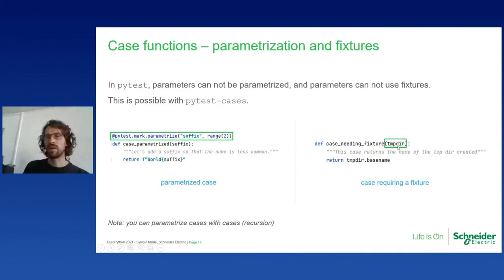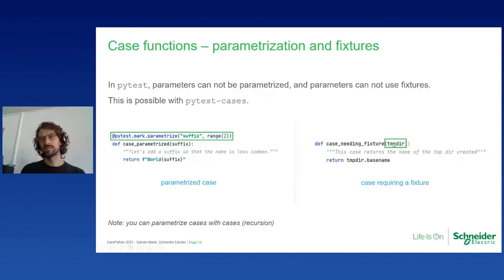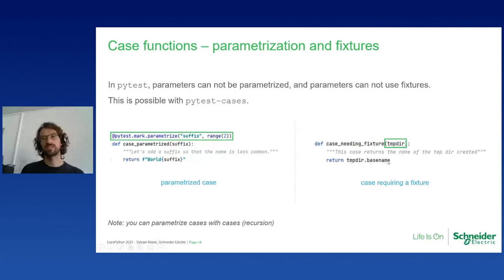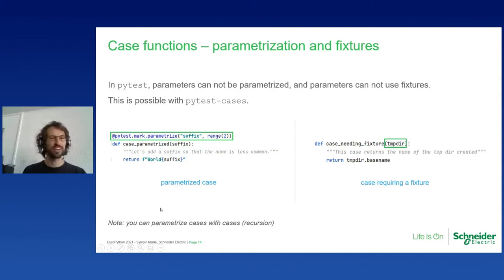For fixtures, it also works — and it's the same way you inject fixtures in test functions. You declare in the signature of your case that there is a fixture, then you can use it. For example, I require the tmpdir fixture I mentioned at the beginning. I extract the base name of the temporary directory and use that as the parameter. And last but not least, you can recurse — you can actually parameterize a case with cases, though it becomes a bit hard to read.